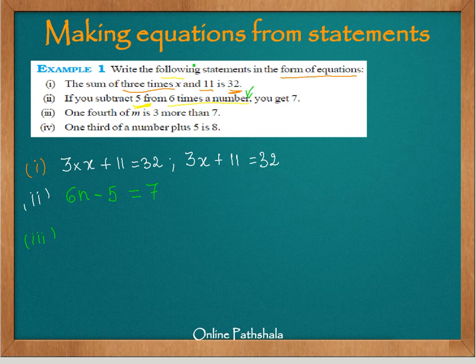So because we want to get an equation, the way we are going to do is 1 fourth of m, that is m into 1 fourth, that is m by 4 is 3 more than 7, which means I can write it m by 4 minus 3 equals 7. This is one way of writing it. m by 4 minus 3 is 7. 1 fourth of m is 3 more than 7. So I am subtracting 3 here. If I add it to 3, then we will get m by 4.